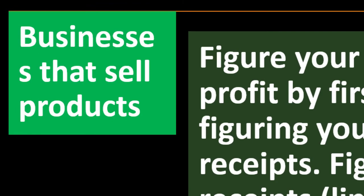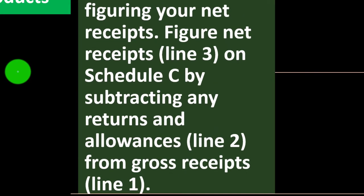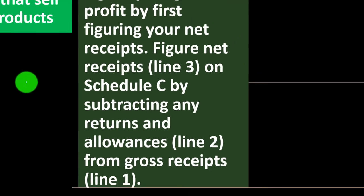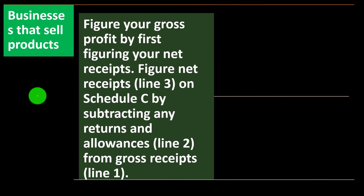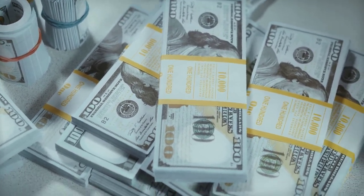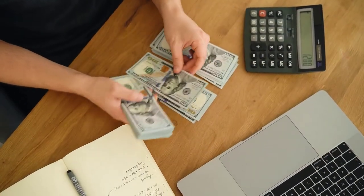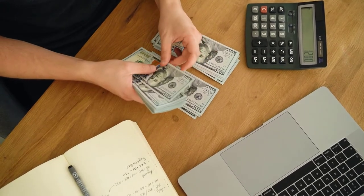For businesses that sell products, figure your gross profit by first figuring your net receipts. That's your income — Line 3 on the Schedule C — by subtracting any returns and allowances on Line 2. Your income minus returns and allowances, which acts like a contra income line — a reduction of income — and then you subtract out the cost of goods sold.